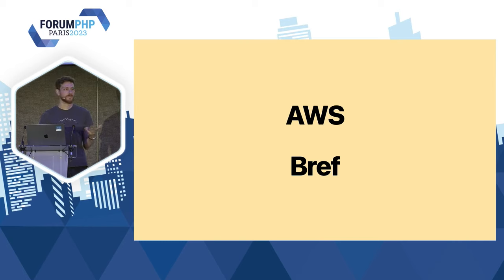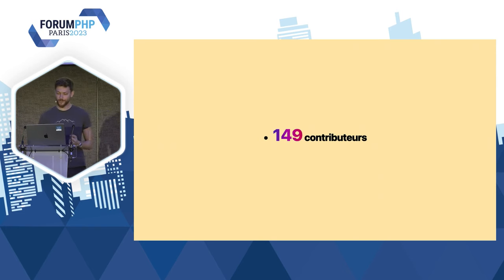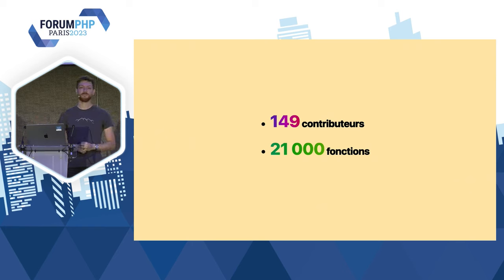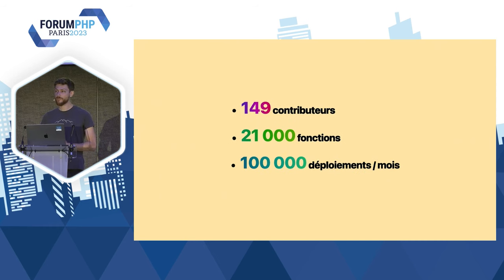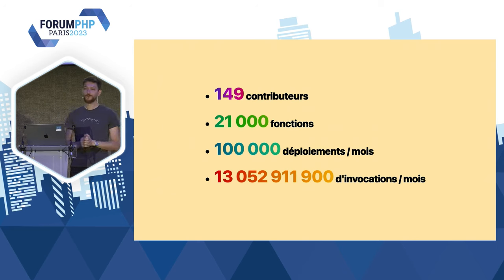Aujourd'hui, le projet a grossi. À l'époque, c'était très expérimental. Aujourd'hui, on est sur presque 150 contributeurs au projet open source. Plus de 21 000 fonctions Amazon Lambda déployées à travers tous les gens qui utilisent Bref. Plus de 100 000 déploiements chaque mois qui sont faits avec Bref. Et on a passé récemment le cap des 13 milliards d'invocations par mois, c'est-à-dire des requêtes, des jobs, des crons, peu importe.